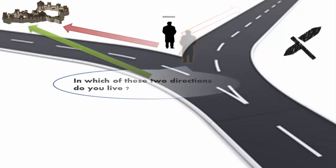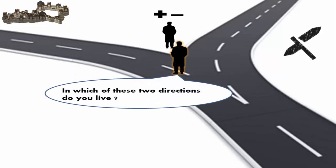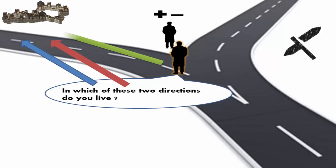So irrespective of whether the resident at the junction is from Truthsville or Liar Town, you need to ask this question: 'In which of these two directions do you live?' In both scenarios you are going to get the same answer, and you have to take the path the resident points to.